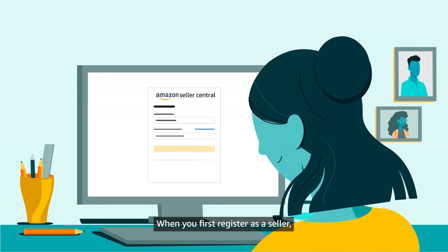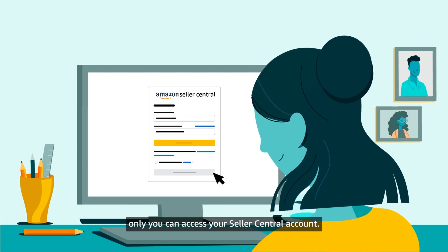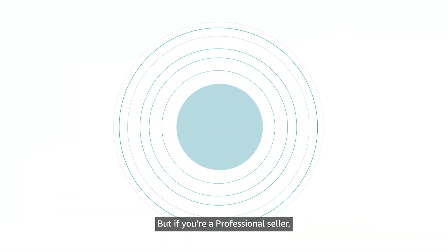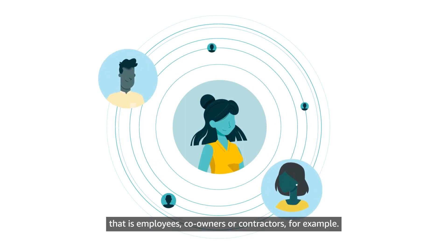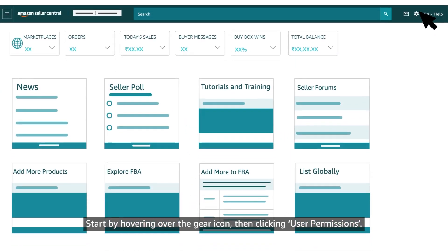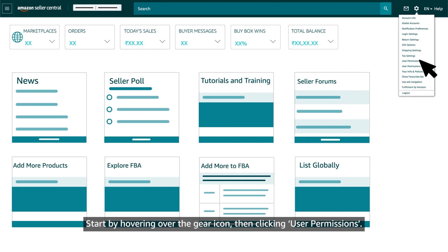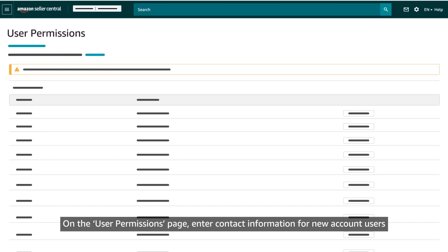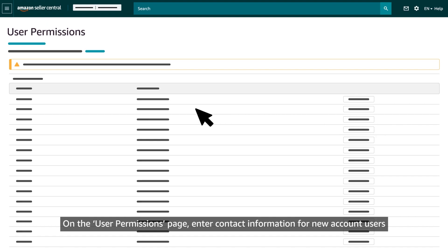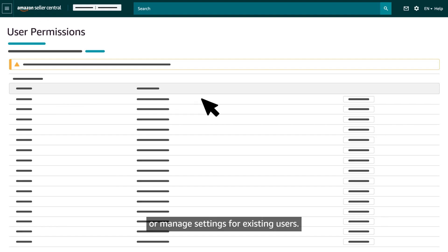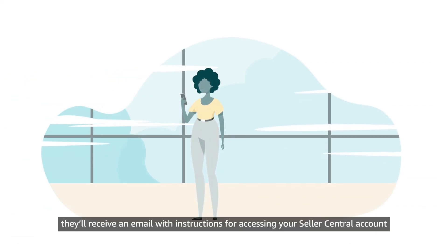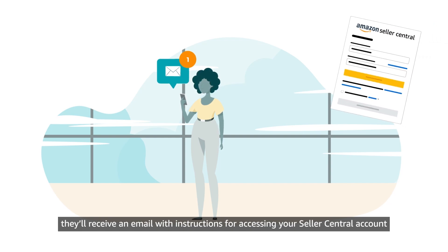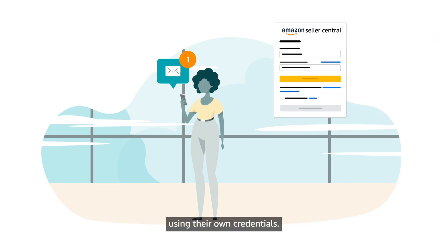When you first register as a seller, only you can access your Seller Central account. But if you are a professional seller, you can provide access to others — that is, employees, co-owners, or contractors. Start by hovering over the gear icon, then clicking User Permissions. On the User Permissions page, enter contact information for new account users or manage settings for existing users. When you invite a new user, they'll receive an email with instructions for accessing your Seller Central account using their own credentials.